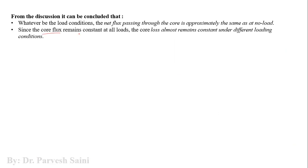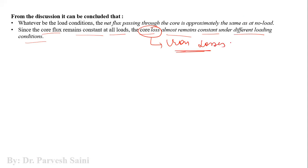Since the core flux remains constant at all loads, the core losses also remain almost constant under different loading conditions. Core losses are also known as iron losses, and this is why we call them constant losses — whether the transformer is loaded or unloaded, the iron losses remain the same.